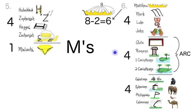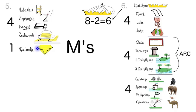Let's say these sections together three times. Habakkuk, Zephaniah, Haggai, Zechariah, Malachi, Matthew, Mark, Luke, John, Acts, Romans, 1st Corinthians, 2nd Corinthians, Galatians, Ephesians, Philippians, Colossians. Habakkuk, Zephaniah, Haggai, Zechariah, Malachi, Matthew, Mark, Luke, John, Acts, Romans, 1st Corinthians, 2nd Corinthians, Galatians, Ephesians, Philippians, Colossians. Habakkuk, Zephaniah, Haggai, Zechariah, Malachi, Matthew, Mark, Luke, John, Acts, Romans, 1st Corinthians, 2nd Corinthians, Galatians, Ephesians, Philippians, Colossians.